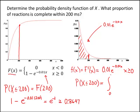So this is 0 to 200, 0.01e to the negative 0.01x dx. And again, exponential, fairly nice antiderivative.